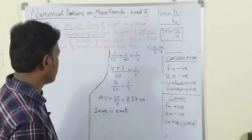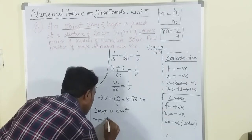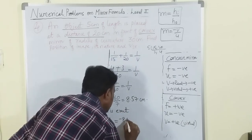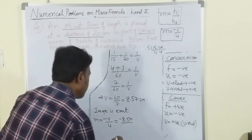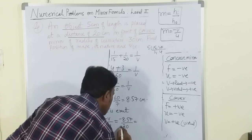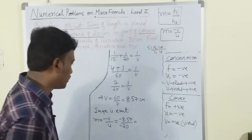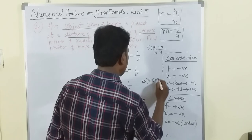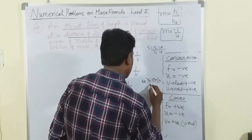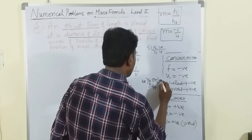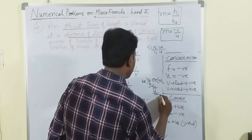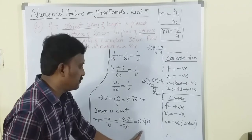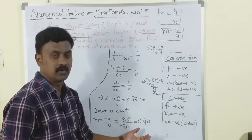Now magnification: m = -v/u = -(8.57)/(-20) = 8.57/20 ≈ 0.42. The value of m is positive and less than 1, so the image is erect and diminished.